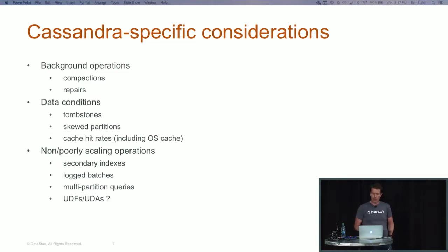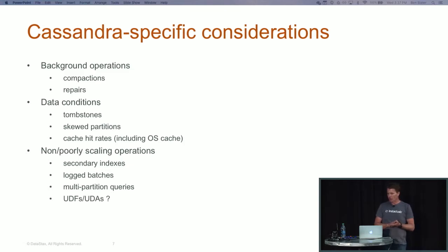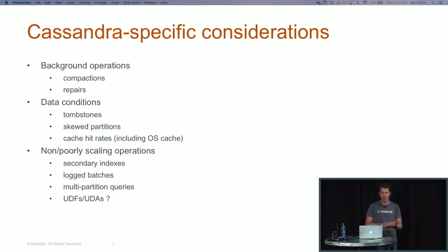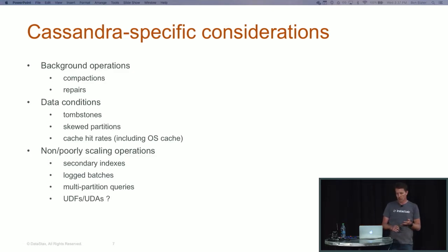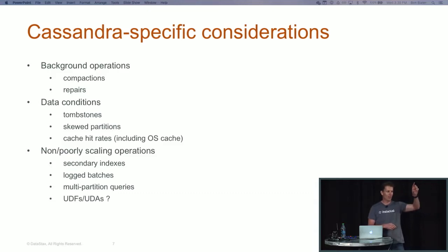That was it on the general load testing things — hopefully some useful stuff even if some was familiar, as these are mistakes I've made a couple of times. The next thing is some Cassandra-specific considerations. The first one is background operations. Most people know what compactions and repairs are in Cassandra. There was a great illustration this morning with level compaction strategy — it looked great for the first one and a half terabytes of load, then suddenly fell through the floor as compactions really started to kick in.